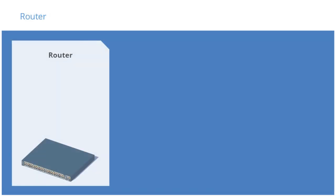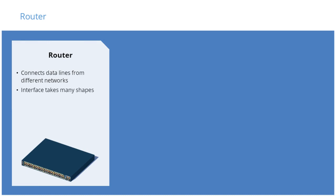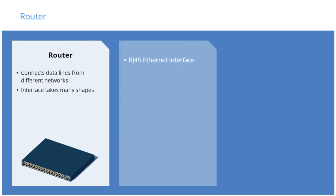A router is connected to two or more data lines from different networks. The physical interface of those data lines can take many different shapes: an RJ45 Ethernet interface, a coaxial cable TV interface, an RJ11 telephone interface, DSL connections, a Wi-Fi interface, an optical fiber interface, and any number of other standards.